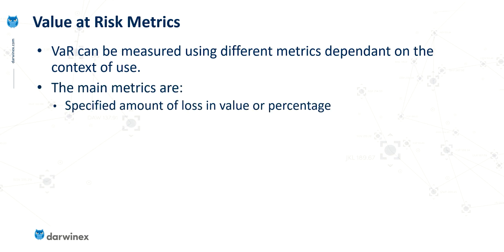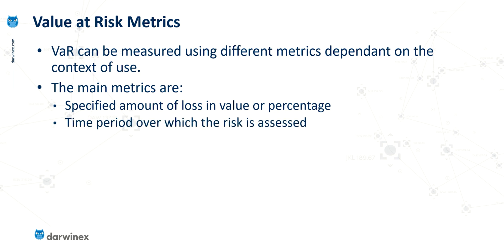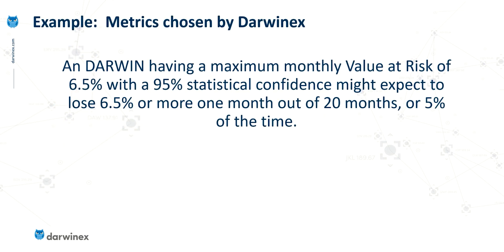When calculating value at risk, you're presented with a number of questions about how the metric should be configured. The main metrics for consideration are: the specified amount of loss, either as a monetary value or as a percentage of the entire fund value; the time period over which the risk is assessed; and finally, what's called the confidence interval. To illustrate this, the example I'm going to use are the metrics used by DarwinX, where a Darwin — the investable asset based on a trader strategy — is configured to have a monthly value at risk of 6.5% with a 95% statistical confidence.